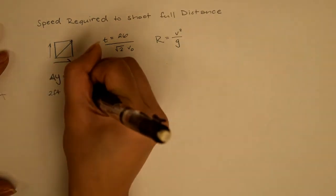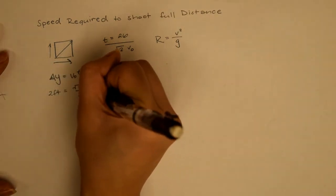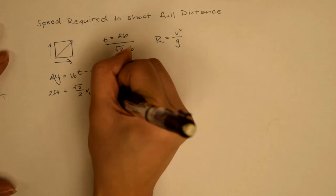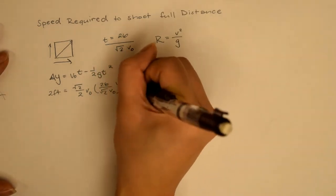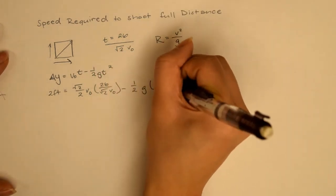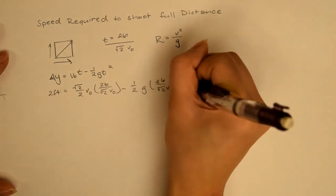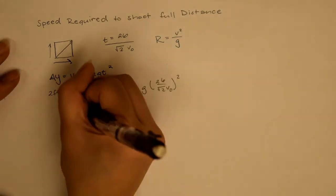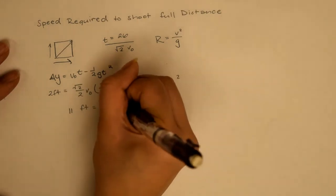For the delta y, I'm plugging in two feet because that's about where the net is, and then the other equations I'm plugging in that I got from the time earlier. From here, it's required to use a calculator in order to figure out the numbers.